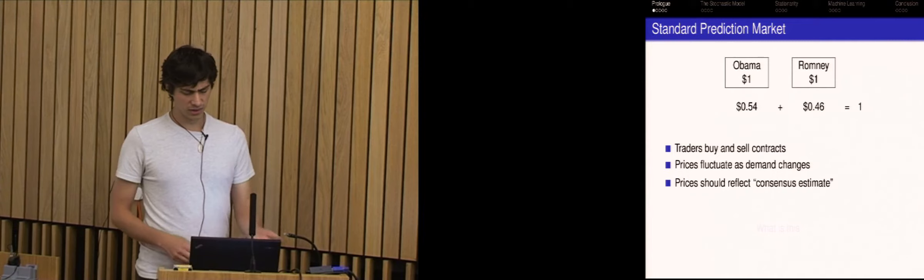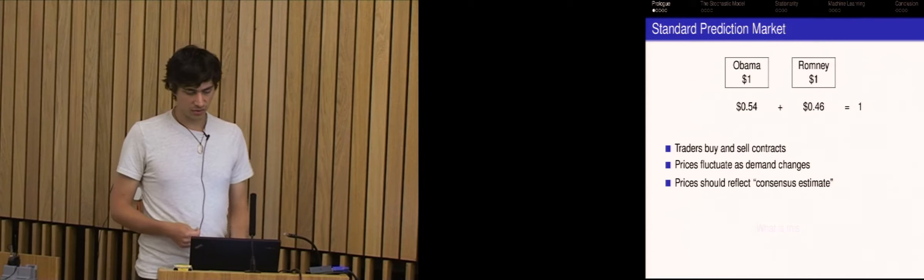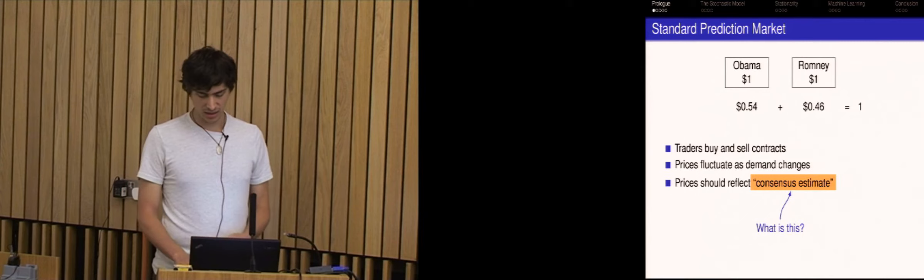And you can see that the prices always have to be less than one, because at most you can get one from these contracts. And actually they have to sum to one. Because if they didn't, if they sum to less than one, then you could guarantee a dollar profit by buying two contracts which sum to less than one. And similarly for selling when they sum to greater than one. So somehow we're getting a probability vector out of these prices.